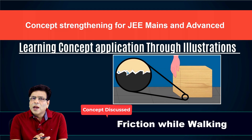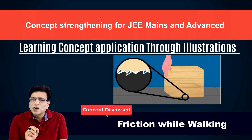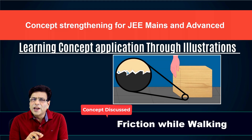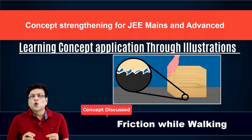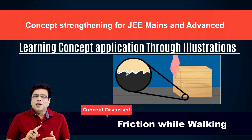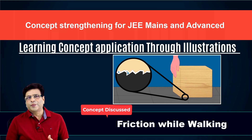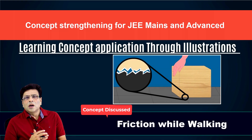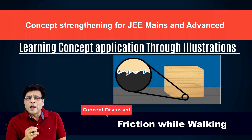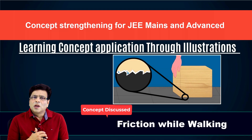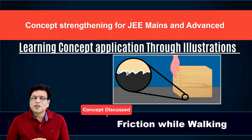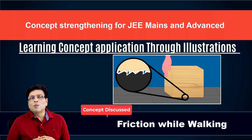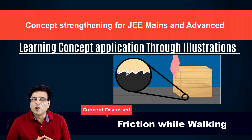If there is no relative sliding and friction is required, then friction is static. Now we can confirm that friction while walking and running should be static in nature. Static friction is self-adjusting — it adjusts not only with the magnitude but also with the direction, according to the requirement.